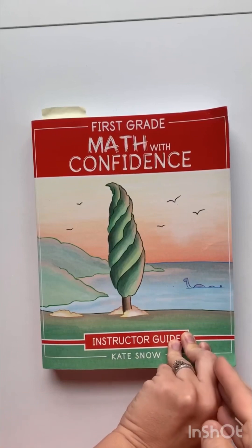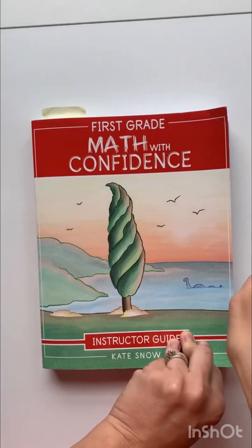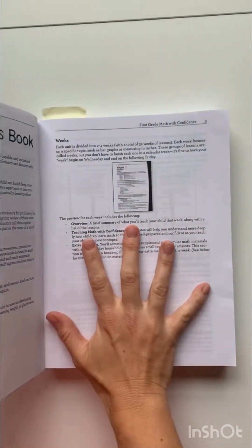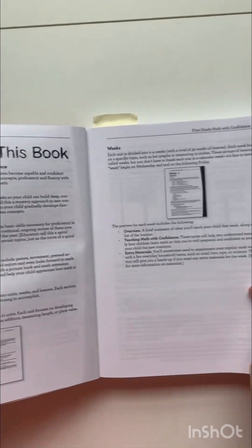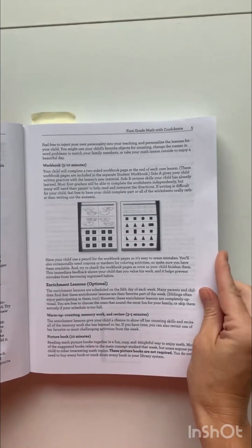Okay, I want to start with the instructor guide because I think it's going to make more sense when you see this first and then the student book. Obviously, when you start it, there's an introduction as well as some information about how to use the book. And I don't want to go over every little detail because I feel like you'll see it as I show you some more of the book.